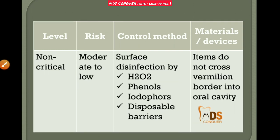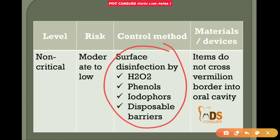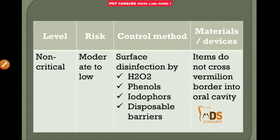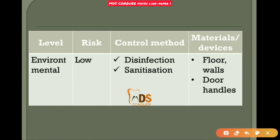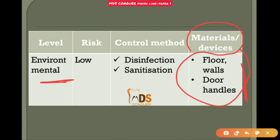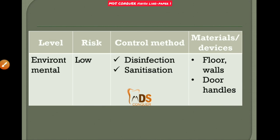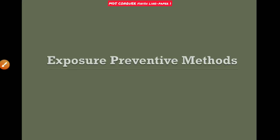Non-critical instruments have moderate to low risk, and specific control methods apply. Environmental items have very low risk. You can write this classification as a table in the exam.